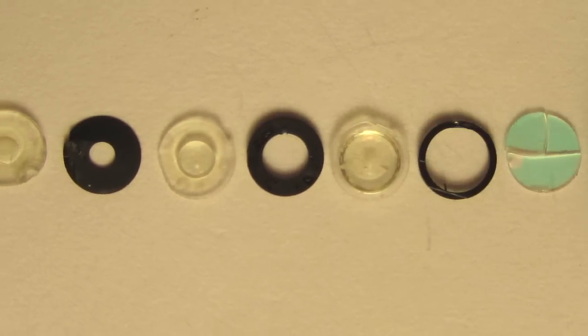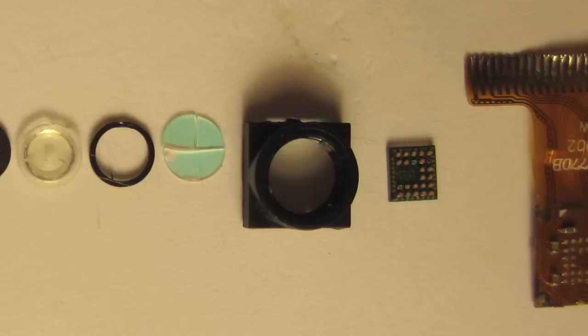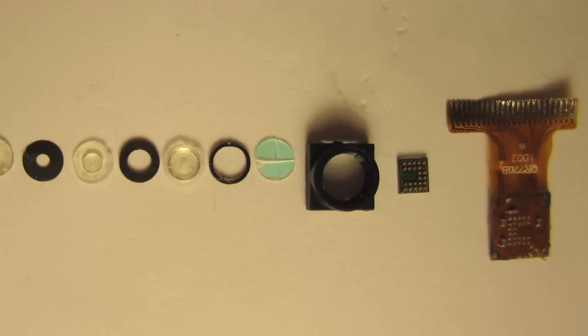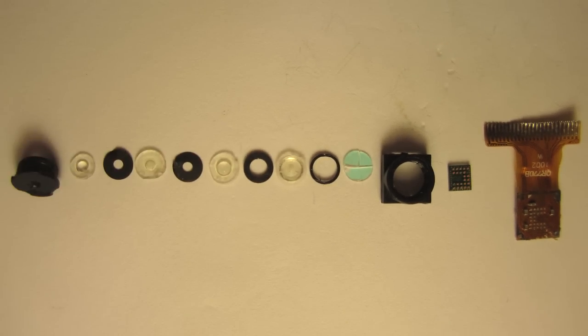From the body to lens 1, 2, 3, and 4, and an infrared blocking filter, a CMOS sensor, and a flat cable.